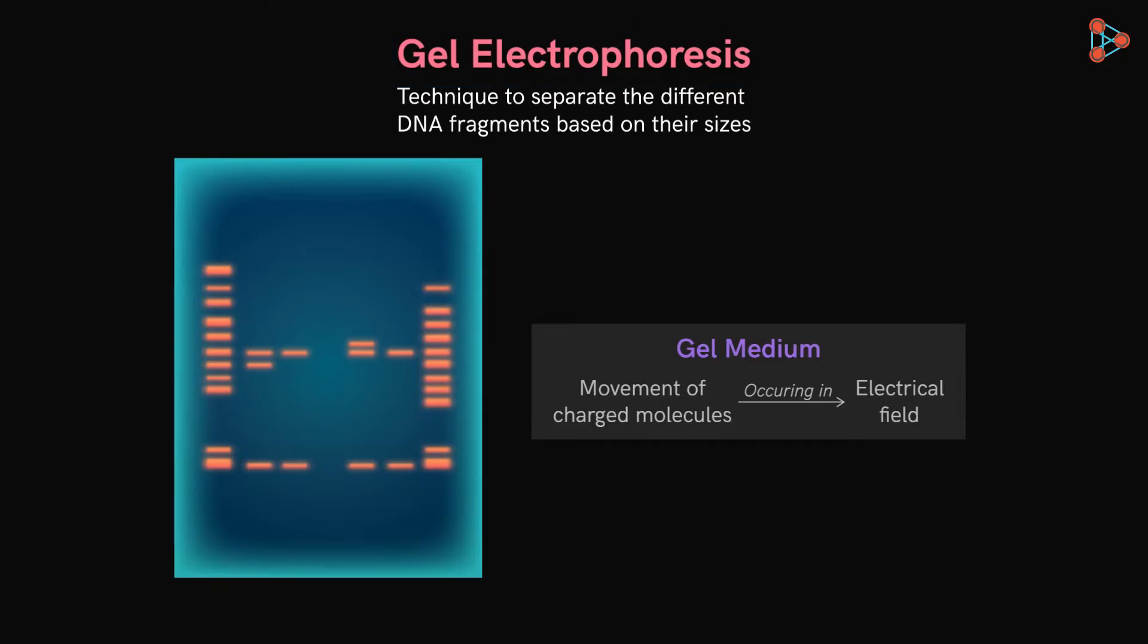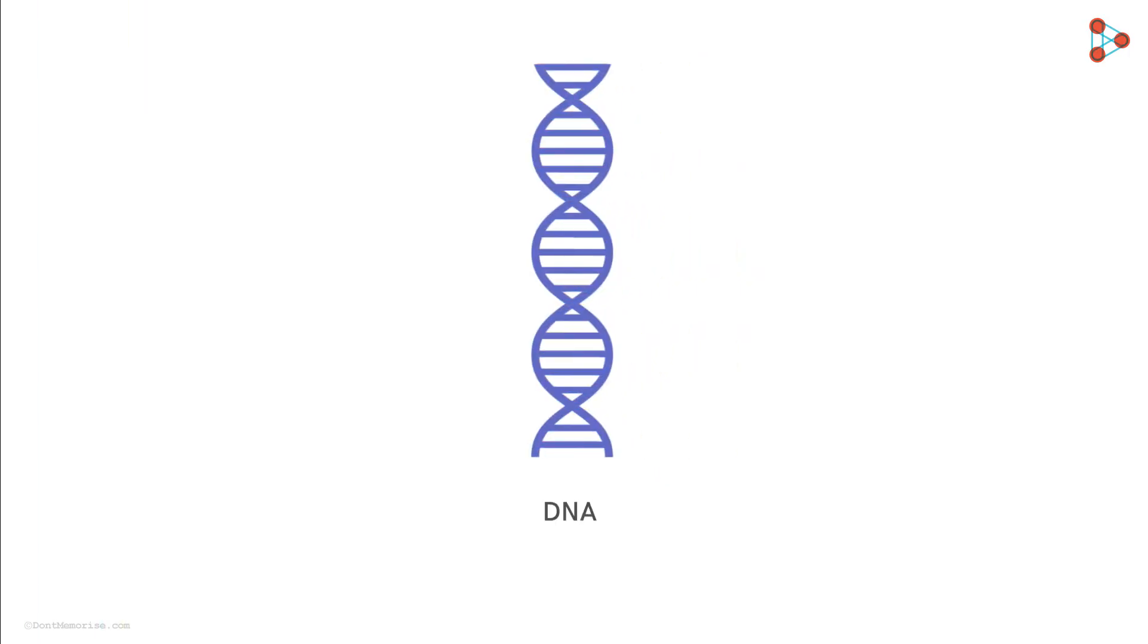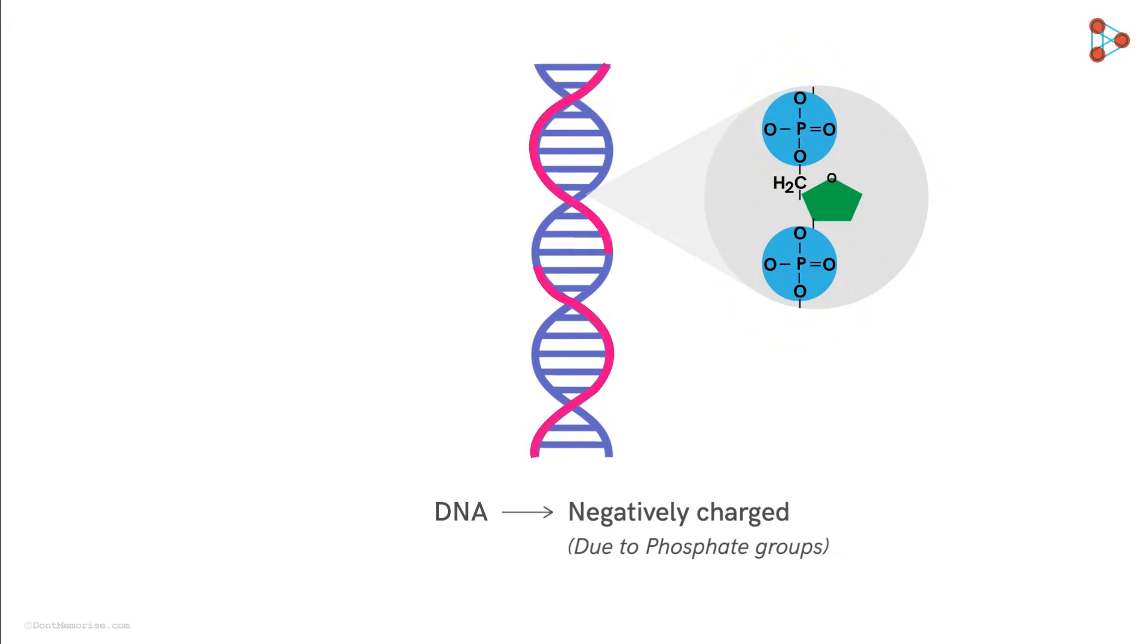Now let's understand the process step by step. But before that, since the term charge is used here, can you guess the charge present on a DNA molecule? Let me tell you that DNA is negatively charged, and this is due to the presence of phosphate groups. These phosphate groups, being negatively charged and present in the backbone of the DNA double helix, impart a negative charge to the complete molecule.